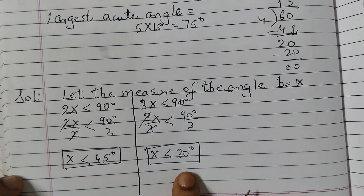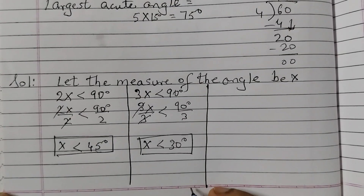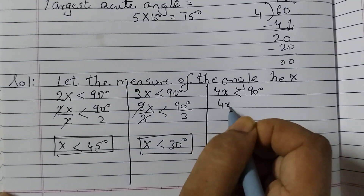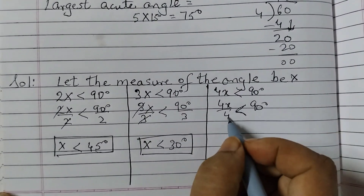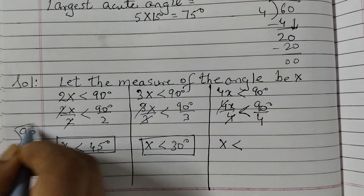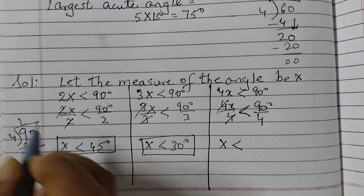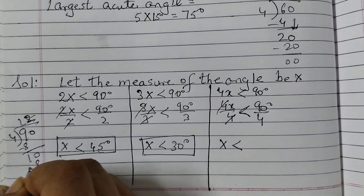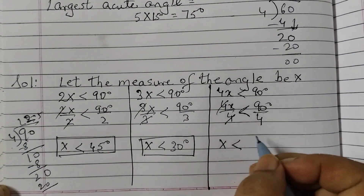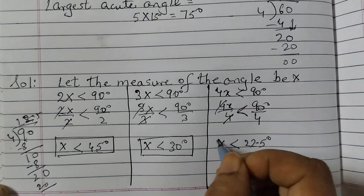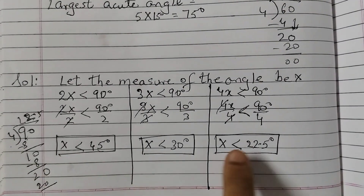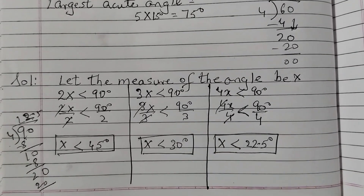So the angle is also less than 30 degrees. The next condition: quadrupling gives 4x < 90 degrees. Dividing both sides by 4, x < 90 ÷ 4 = 22.5 degrees. So combining the three conditions — x < 45, x < 30, x < 22.5 — the binding constraint is that the angle is less than 22.5 degrees.